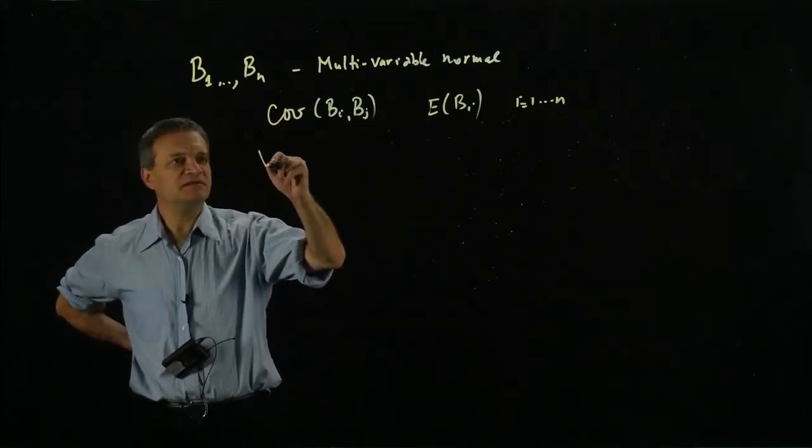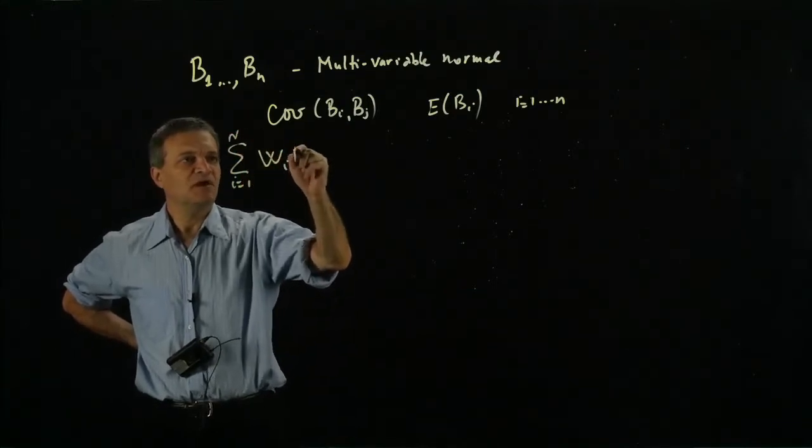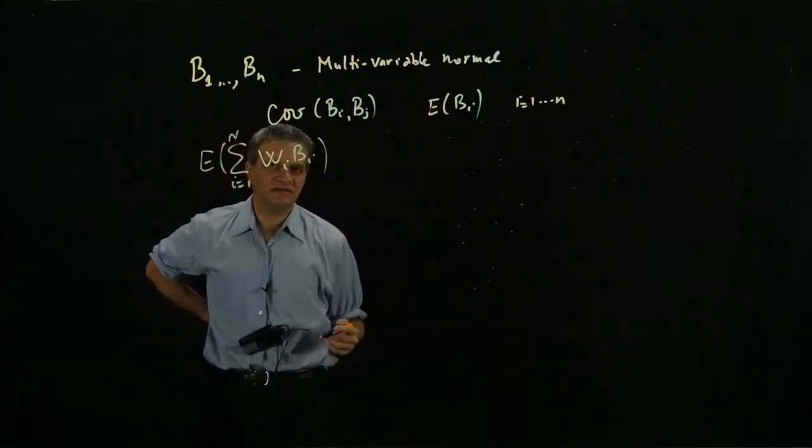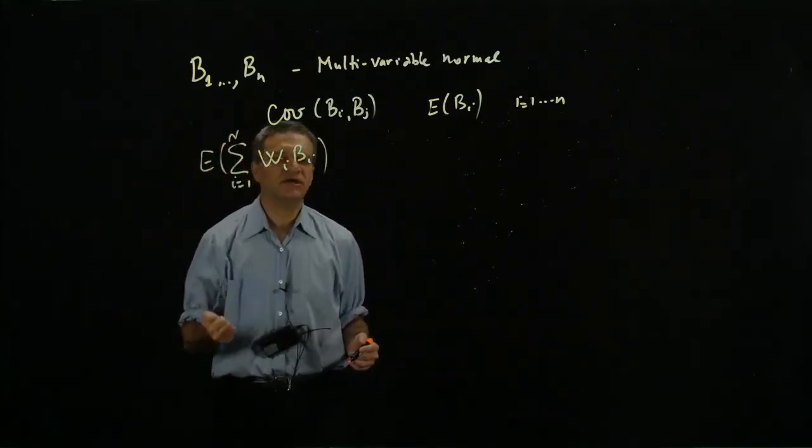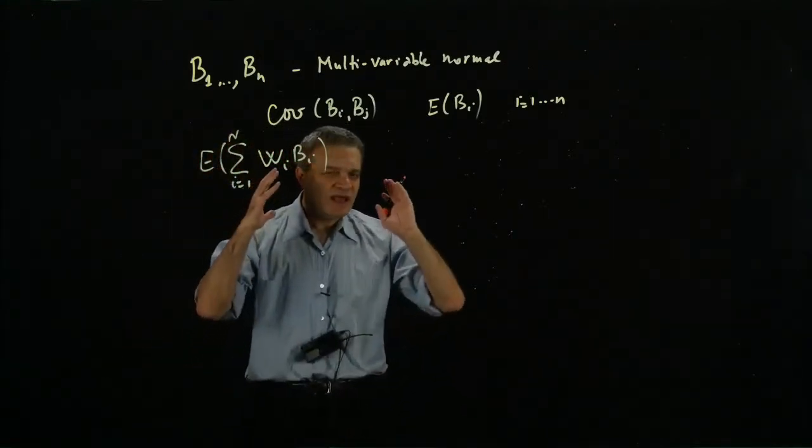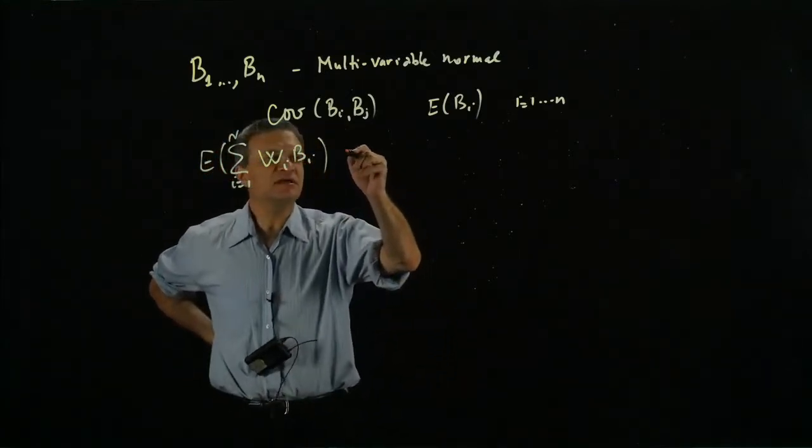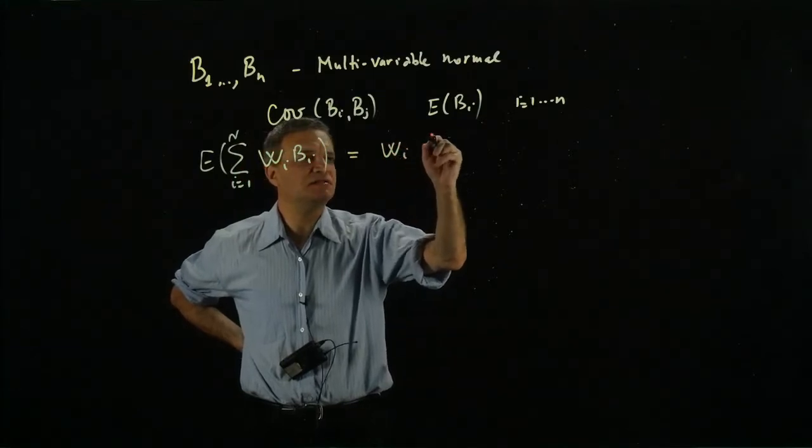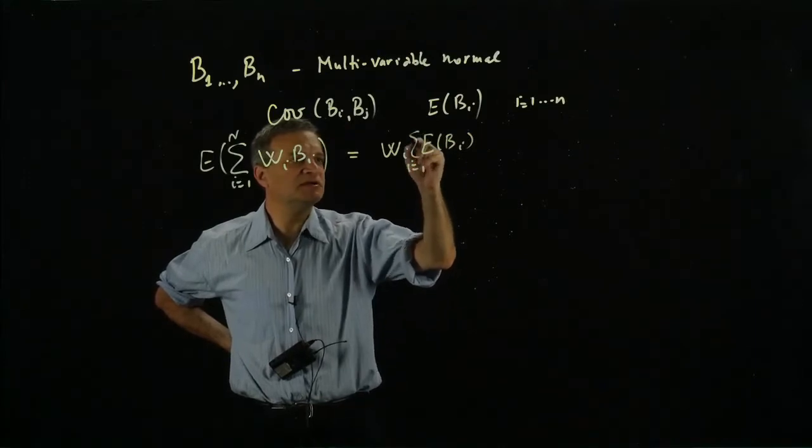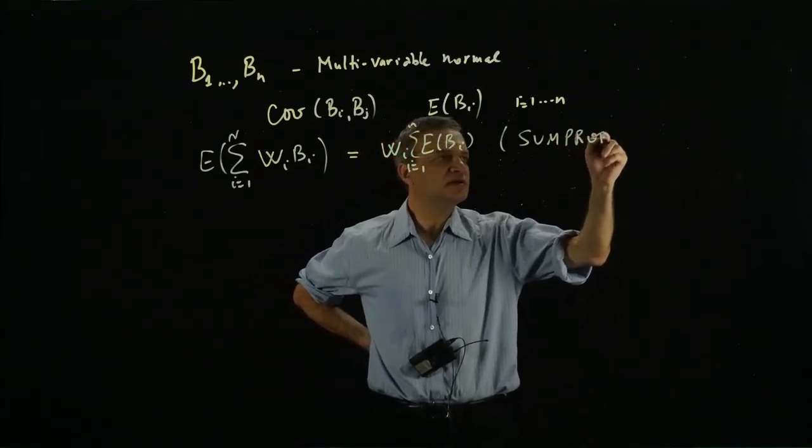If I have a portfolio of assets and I have a sum like this, I want to find the expected value and the volatility. We said in class that volatility equals risk in modern finance—it's not exact but it's 90% there. The expected value is easy: it's just the sum product function in Excel.